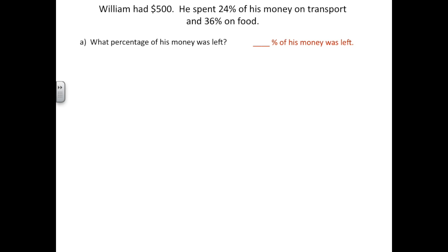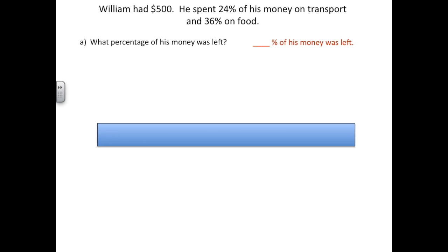When solving a word problem, we always want to look at the information that's given to us first. We're told that William had $500 in all. So when we draw our bar, we can start by drawing the entire bar and labeling the whole amount $500. We are then told that 24% of his money was spent on transport.